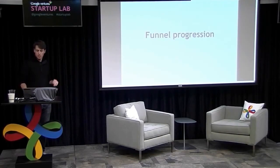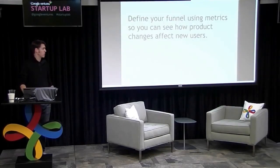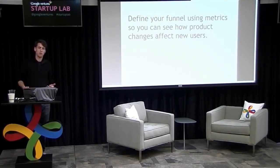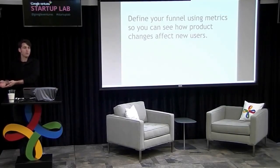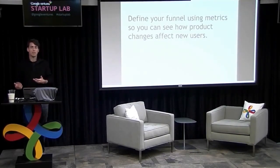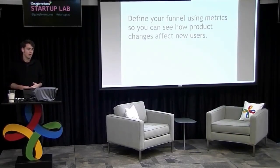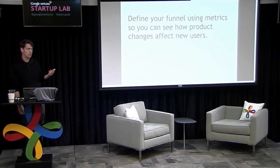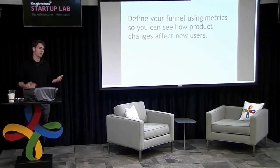That's all retention stuff. The other thing is funnel progression. The idea is to define your funnel using metrics so you can see how product changes affect new users. The funnel is the progression of your users towards what you want them to do, and you need metrics that define whether that's being successful. For my product it's users answering another survey question someday, or buying a second survey. For a social network it's engagement — continuing to send messages or increasing their graph size. You want to define your funnel using metrics.